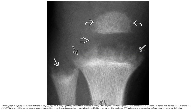AP radiographs in a young child with rickets show fraying, cupping, and splaying of the proximal tibial and fibular metaphysis. This represents loss of the normally dense, well-defined zone of provisional calcification (ZPC) at the metaphyseal junction. The radiolucent tibial physis is lengthened. The epiphyseal zone of provisional calcification is also lost, with poor bony margin definition.